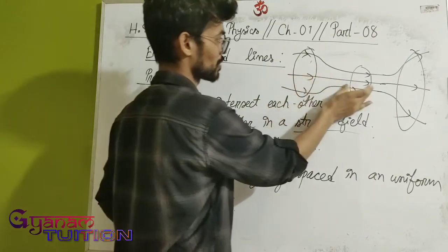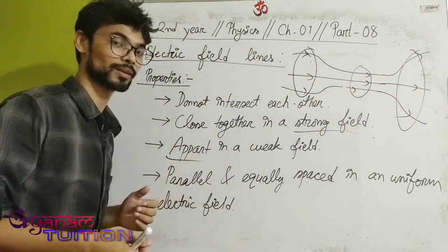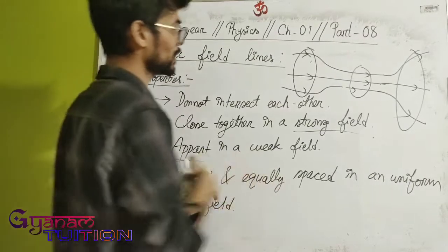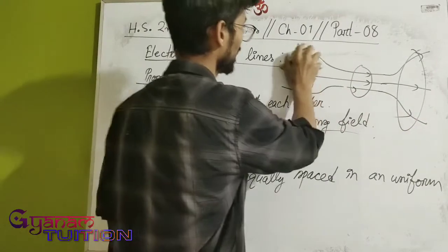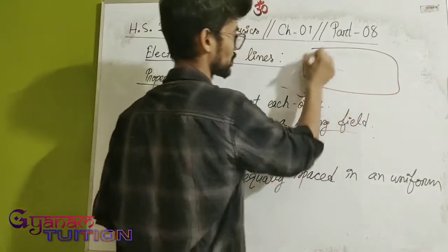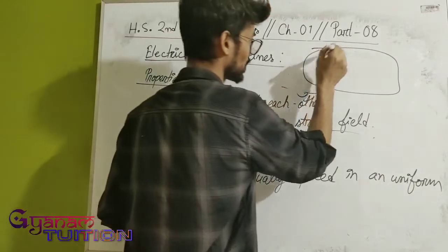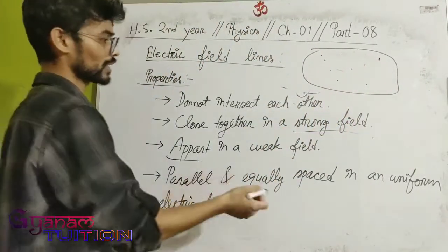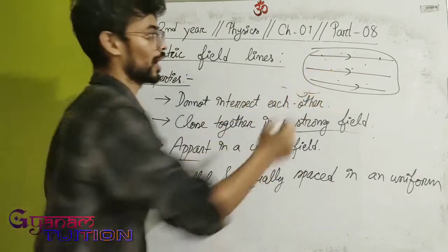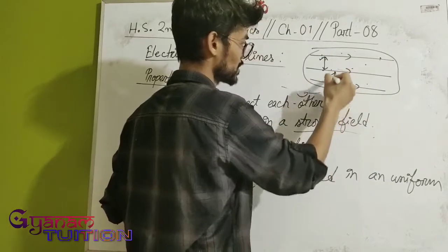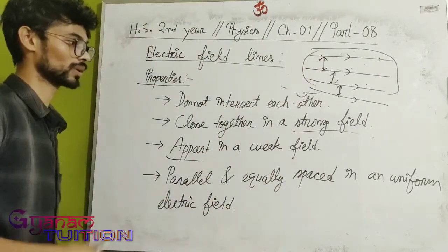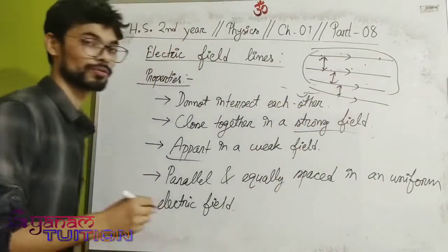Third property: in a uniform electric field, the electric field lines are parallel and equally spaced. This means at every point in that space, the value of the electric field is the same — uniform throughout. So parallel and equally spaced field lines indicate a uniform electric field.